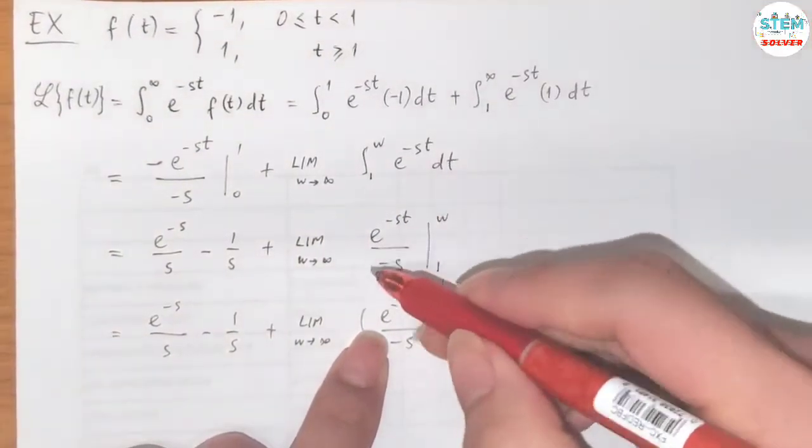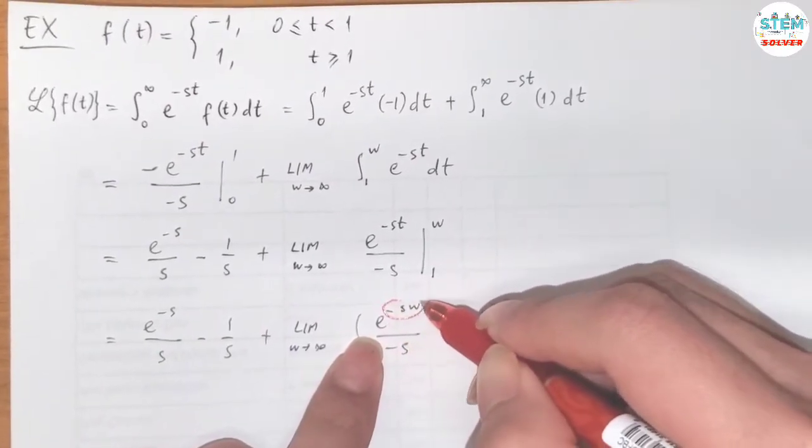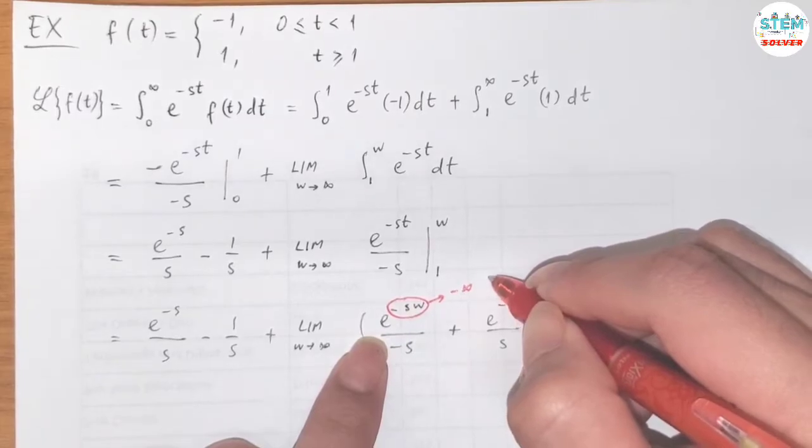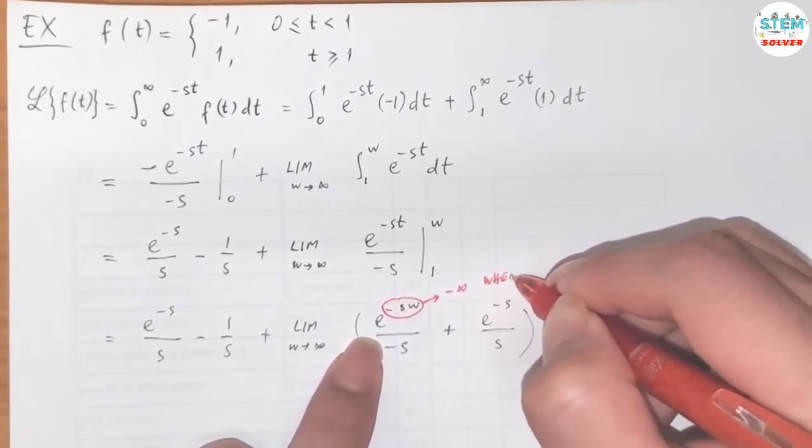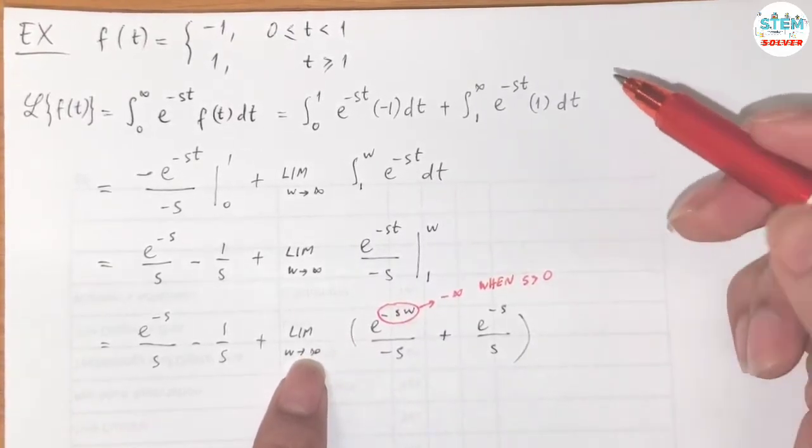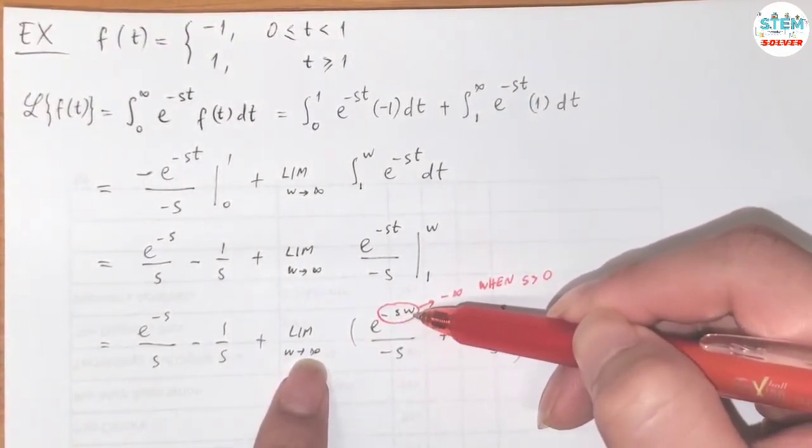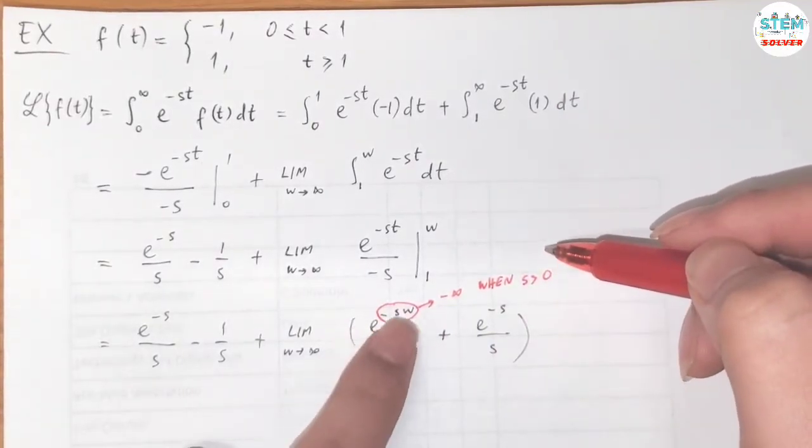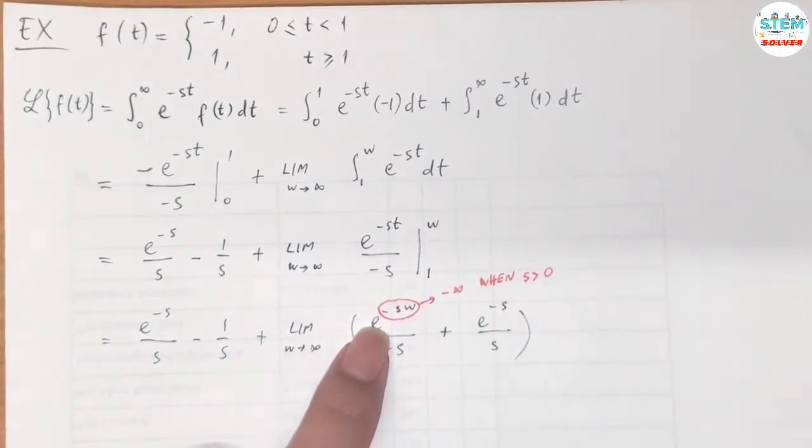So this will happen, this will go to negative infinity when s greater than 0. So you have w goes to infinity, so you have negative s times infinity. And if s is greater than 0, then this will go to 0 and it will converge.